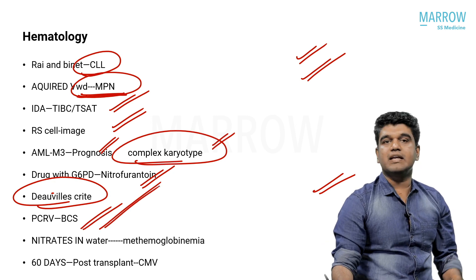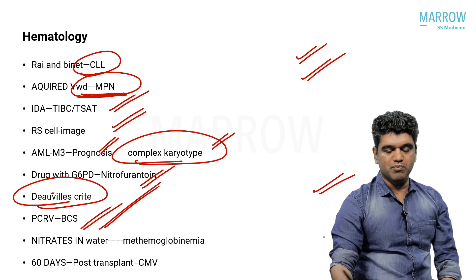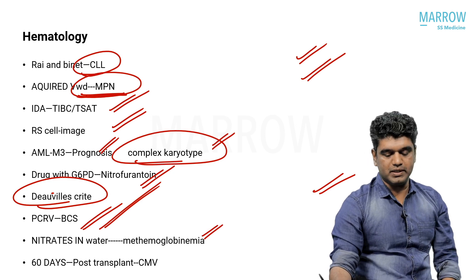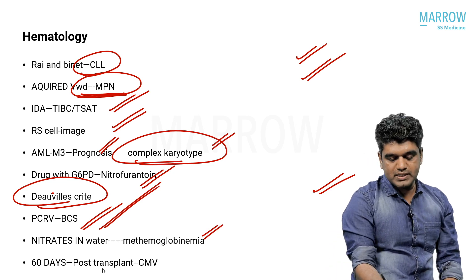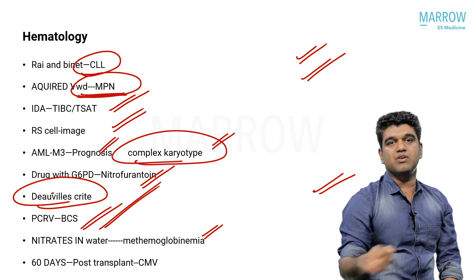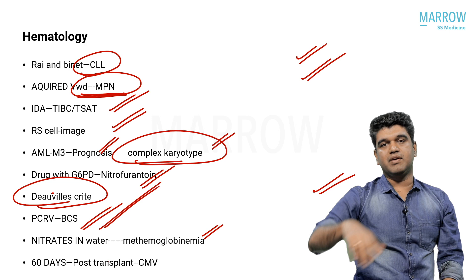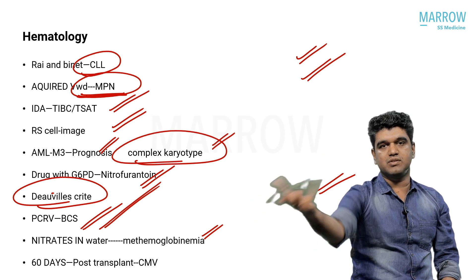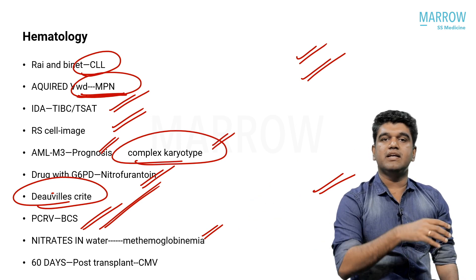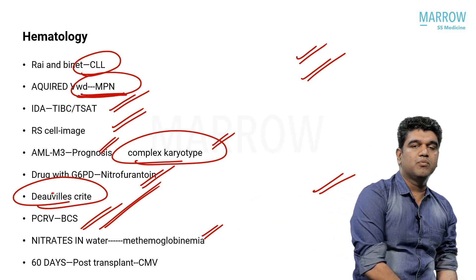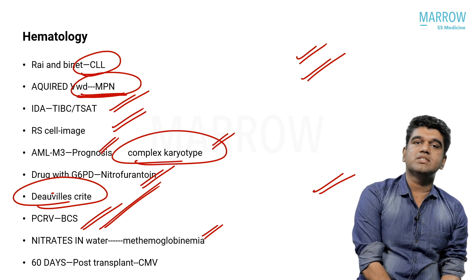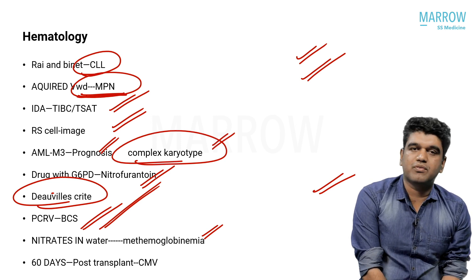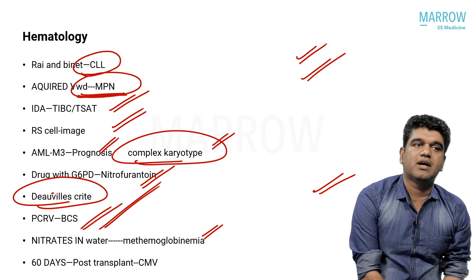PCV and Budd-Chiari syndrome association — which many have mentioned. Nitrates in water and methemoglobinemia — everybody knows this, very core and simple. Post-transplant infections — we'll do a session on infections also in the next part, covered by an ID specialist.